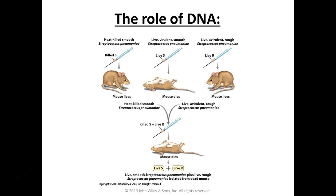Griffith concluded that something from the dead smooth bacteria was being picked up by the live rough ones — it wasn't zombie bacteria coming back to life, but rather genetic material passing between them. It wasn't until the next scientist that they narrowed it down to DNA, and then the next set of experiments actually proved it. That's the information storage for the cell.